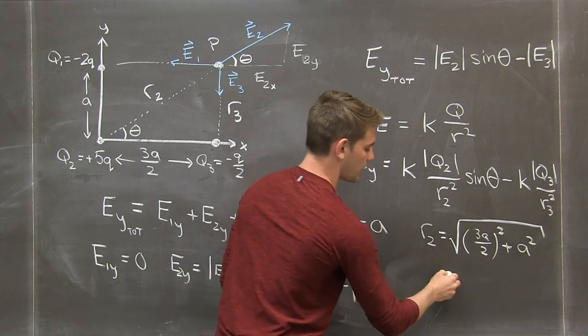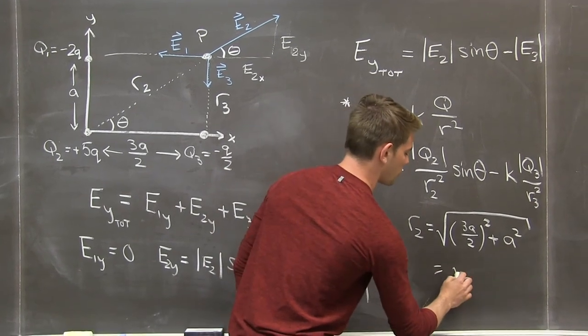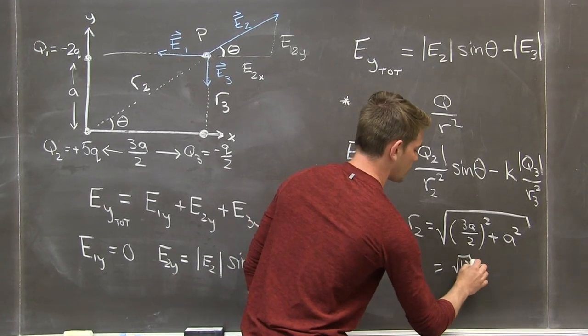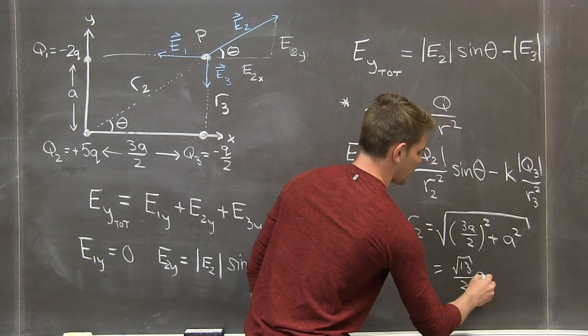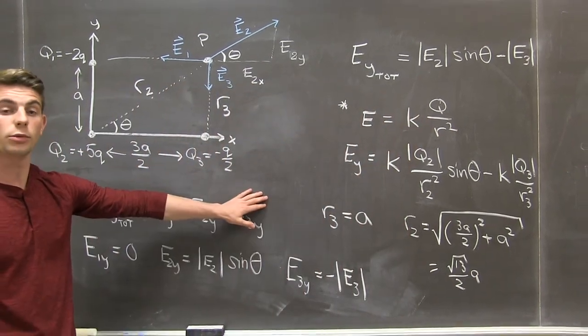And this evaluates to the square root of 13 over 2 times a, and we know a at this point.